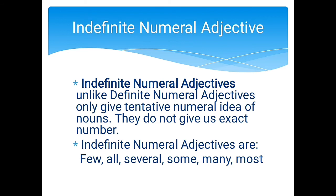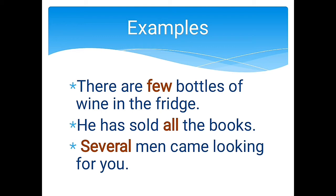Indefinite numeral adjectives, unlike definite numeral adjectives, only give a tentative numerical idea. They specify a numeral subject but do not give any specific count value — they only provide information about the amount of the noun without telling the exact amount. Indefinite numeral adjectives are: few, all, several, some, many, and most. Examples: 'There are few bottles of wine in the fridge.' 'He has sold all the books.' 'Several men came looking for you.' These only indicate amount, not exact count.